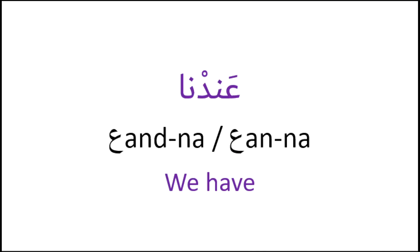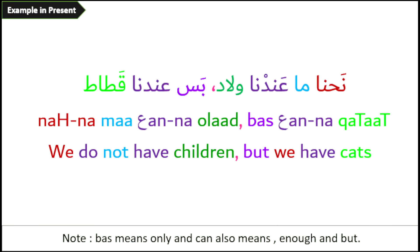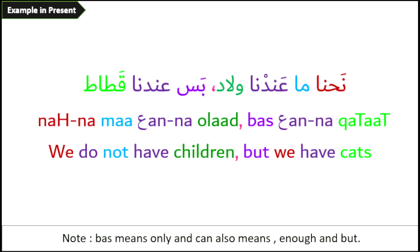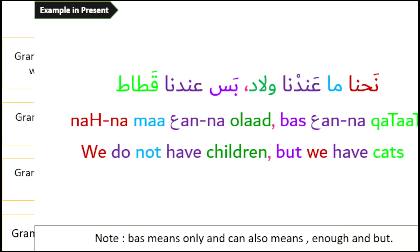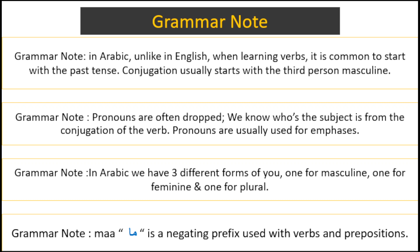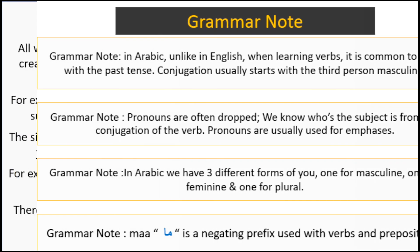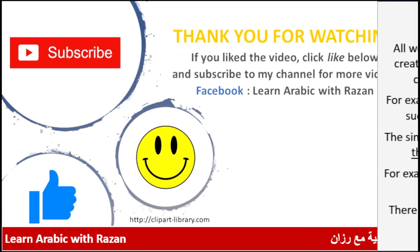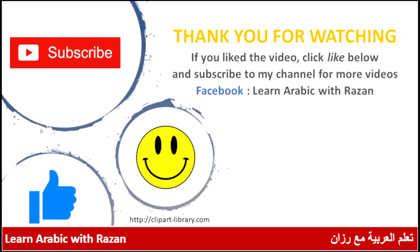عندنا or عنا – we have. Example: نحنا ما عنا ولاد، بس عنا قطاط – We don't have children, but we have cats. Here is a grammar note – please read it at your leisure. Thank you very much for watching, I hope you enjoy it. Yalla bye!